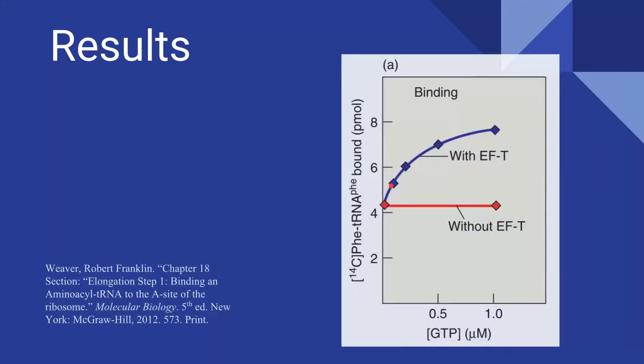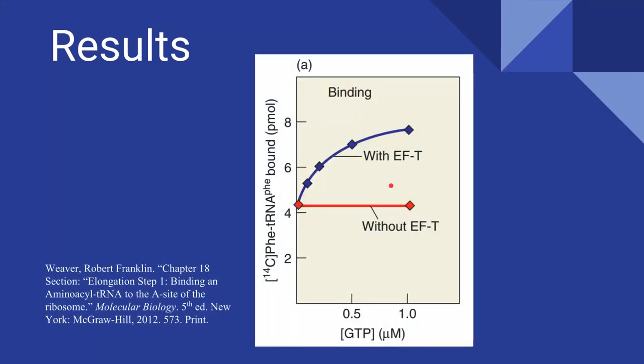Moving on to the results, we have GTP concentration along the x-axis and bound phenylalanine-tRNA on the y-axis. Ravel recorded without any EF-T, there was a high background level of phenylalanine-tRNA bound to the ribosomes, as demonstrated by the red line here.